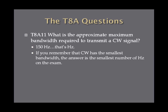What is the approximate maximum bandwidth required to transmit a CW signal? CW has a small bandwidth — 150 hertz. That's hertz, not kilohertz, not megahertz — 150 hertz. If you remember that CW has the smallest bandwidth, the answer is the smallest number of hertz on the exam. So, 150 hertz for a CW signal.